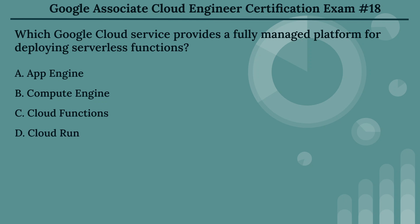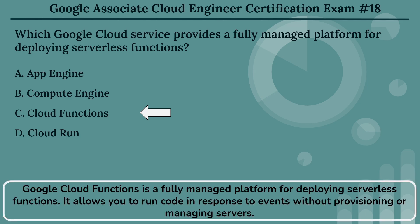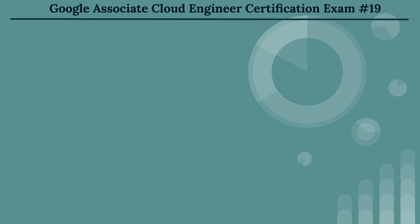The right answer is Option C: Cloud Functions. Google Cloud Functions is a fully managed platform for deploying serverless functions. It allows you to run code in response to events without provisioning or managing servers.